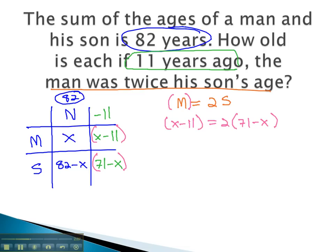This gives us an equation we can quickly solve for x. Start by distributing the 2 to get x minus 11 equals 142 minus 2x.